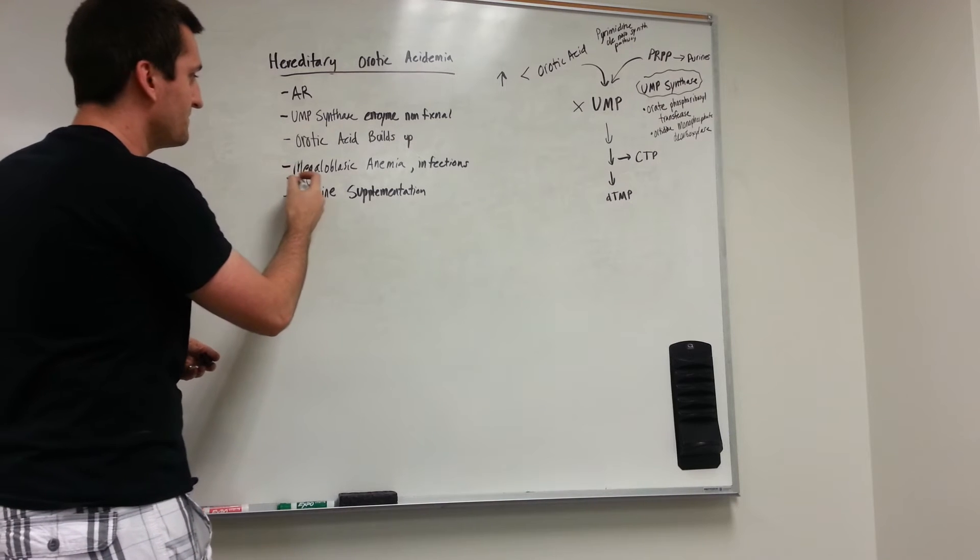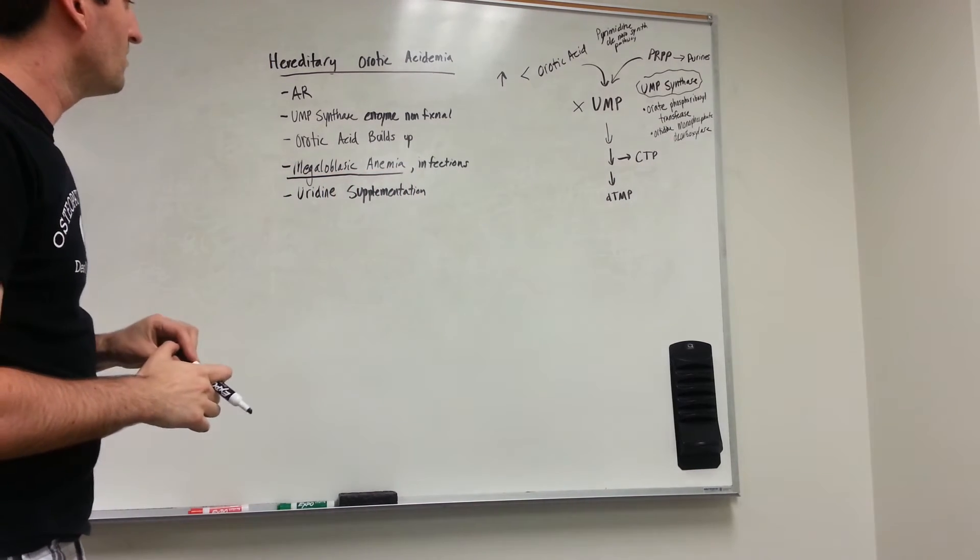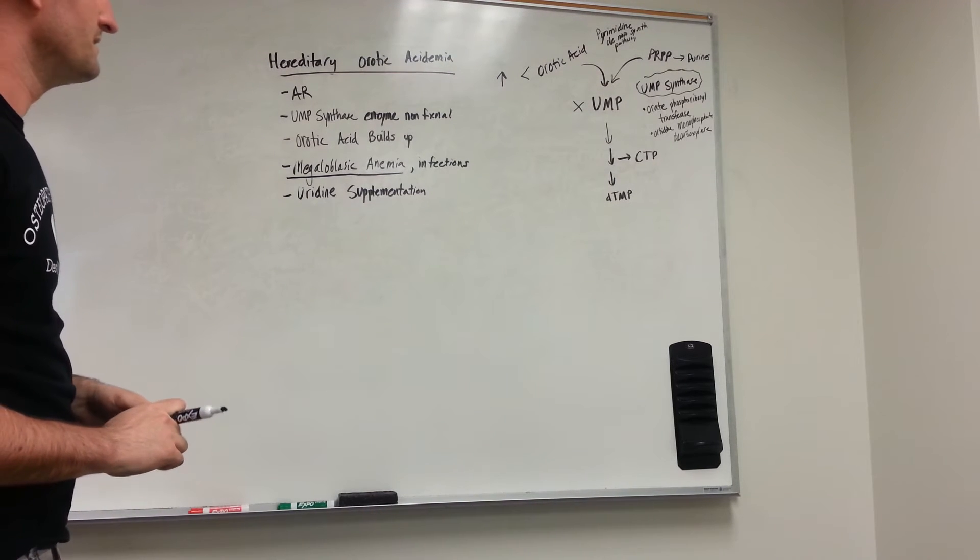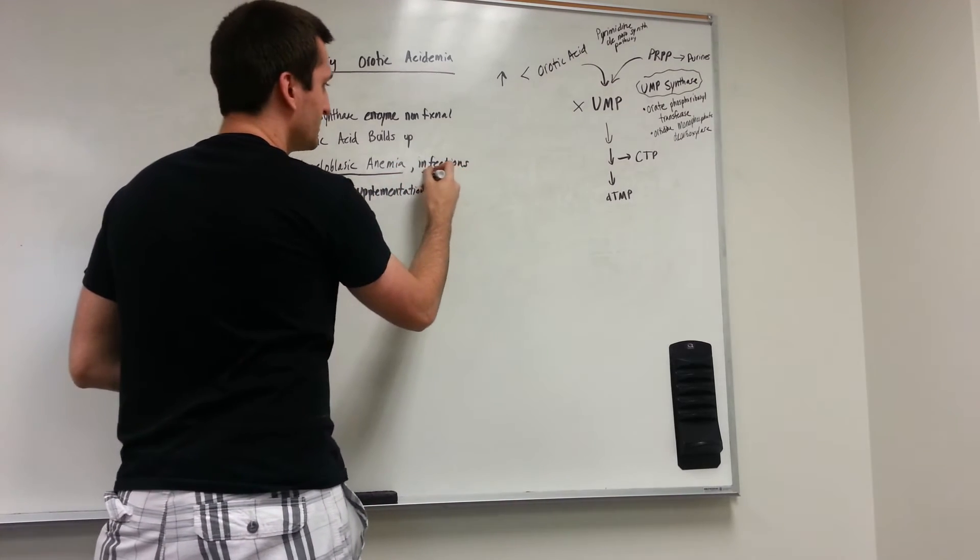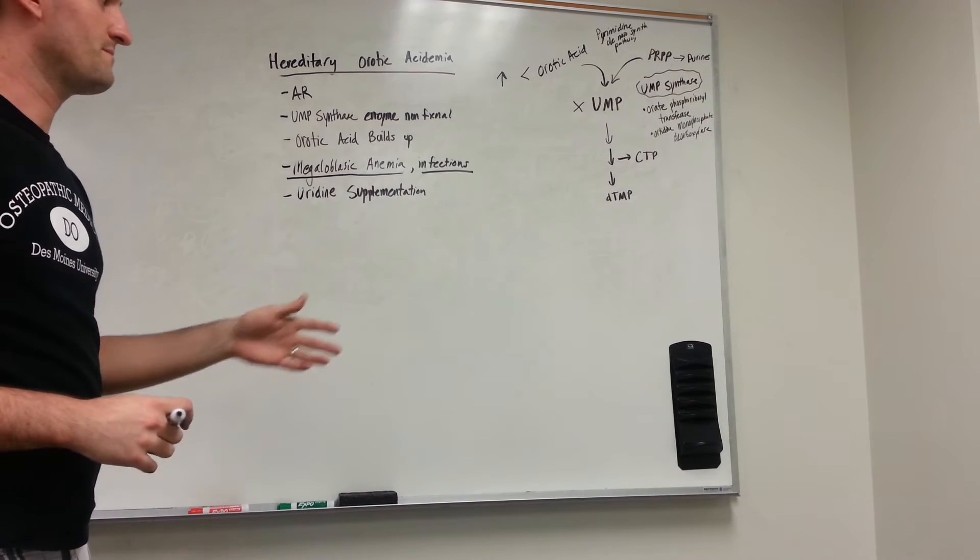We'll see megaloblastic anemia—that means large cell anemia. Also, we may get infections because our immune system cells are not able to turn over or replicate at a high enough rate.